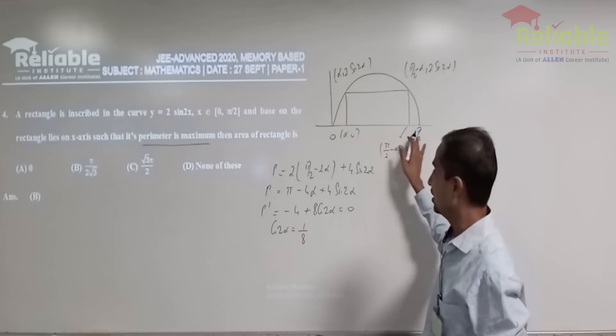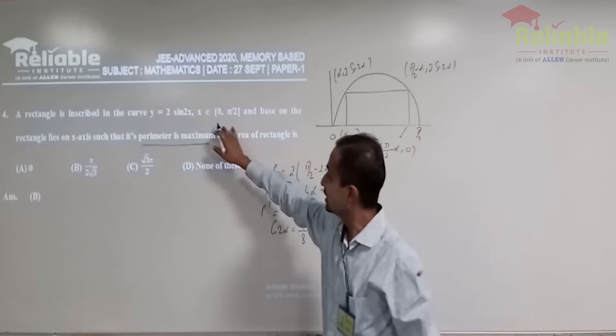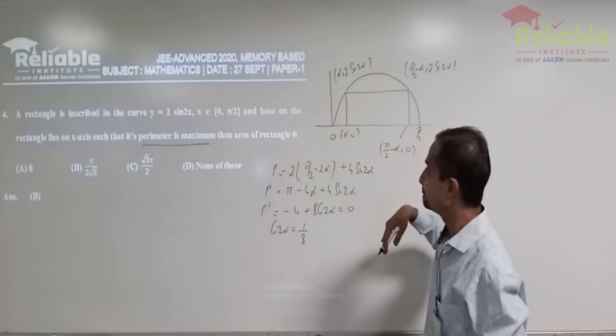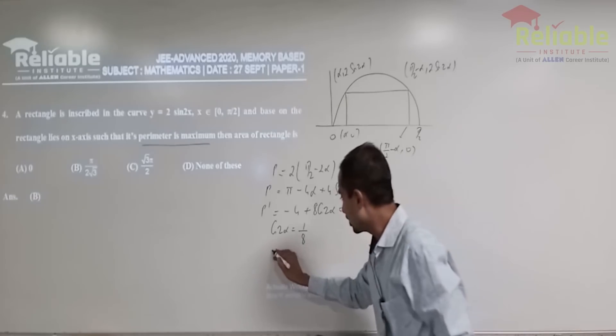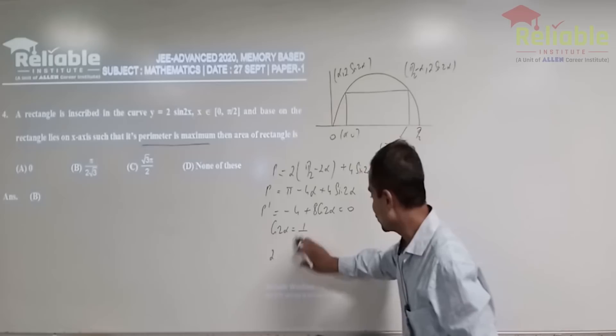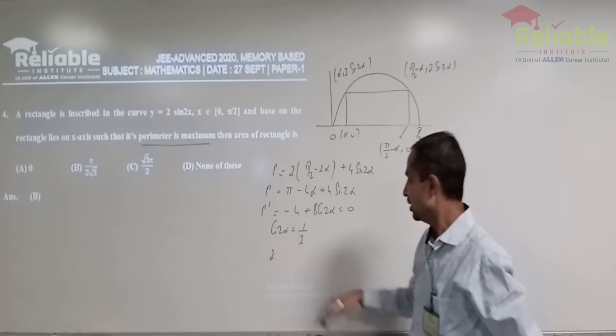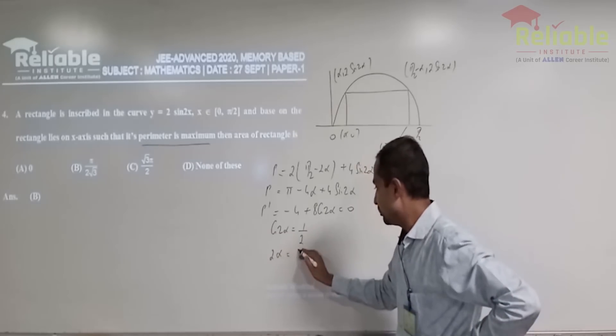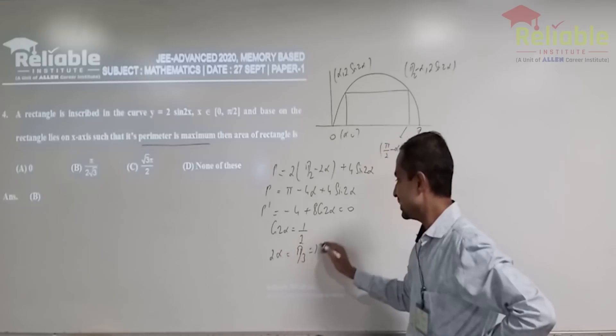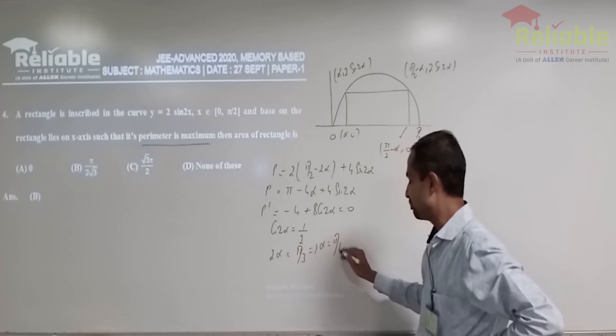And since alpha belongs to zero to pi by two. So, here, two alpha, sorry, this is one by two. Yeah, my bad. So, two alpha will be pi by three and hence alpha will be pi by six.